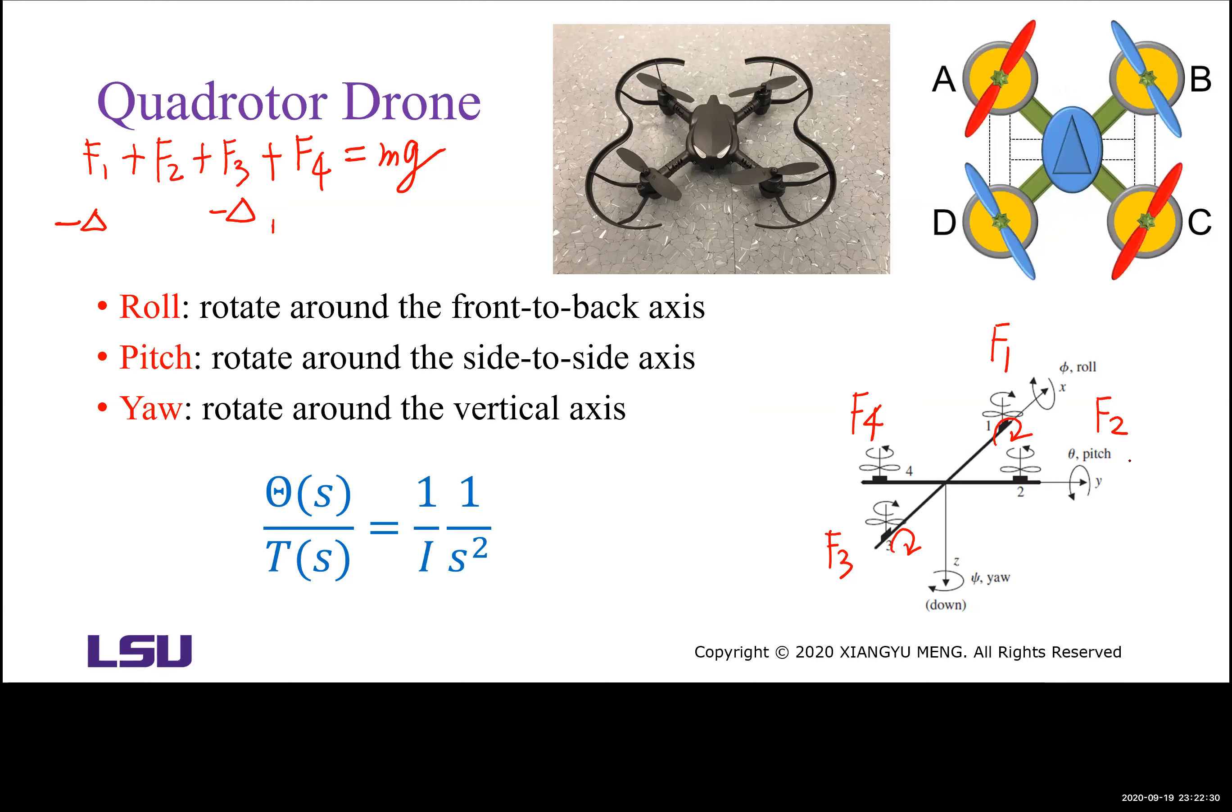Then we need to increase the rotational speed of Rotor 2 and Rotor 4. If we increase or decrease the rotational speed of all four rotors by the same amount, then the sum will not be changed. Then the quadcopter will not have vertical motion.